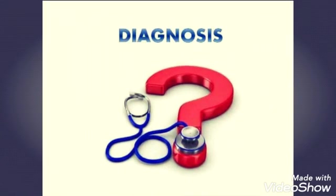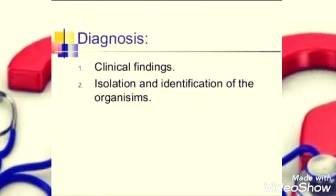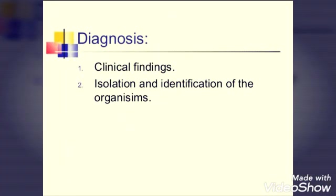For diagnosis, the first step is clinical findings — you are going to notice the signs and symptoms, mainly the green fluid from those ulcerative regions. Then isolation and identification of the organism: you will isolate the patient so that they cannot transmit the disease, and you will try to find out the causative agent, going for blood tests to identify the bacteria.